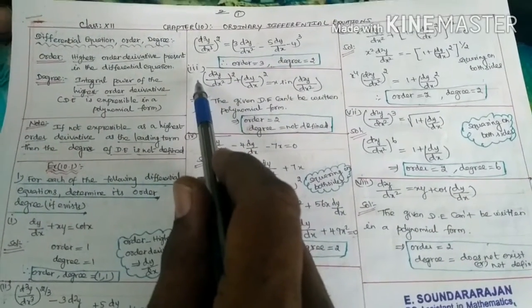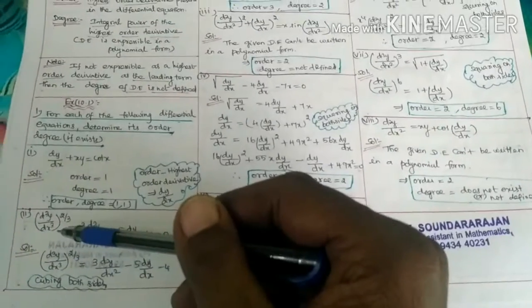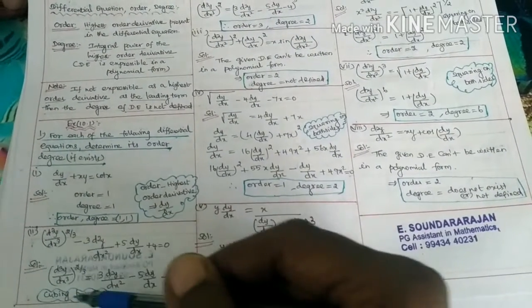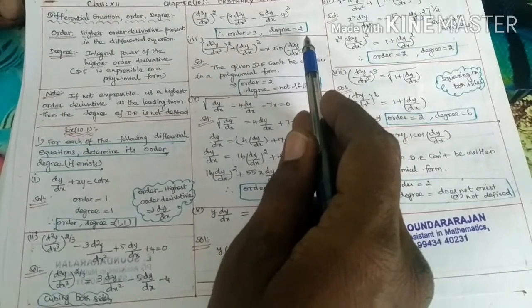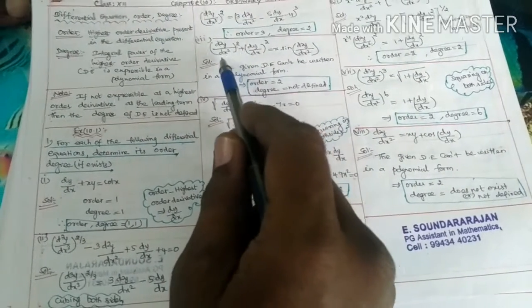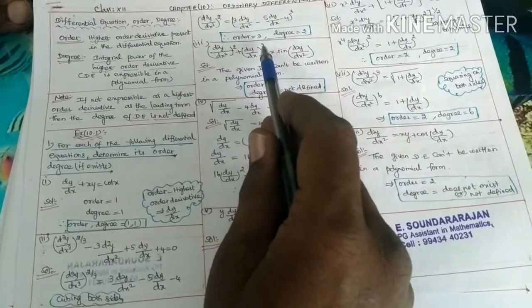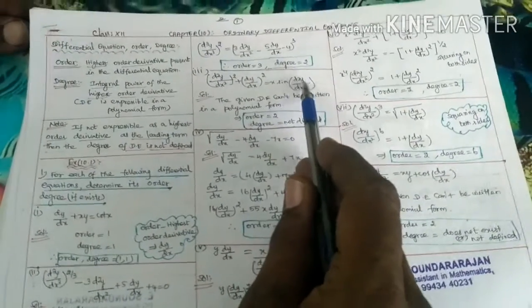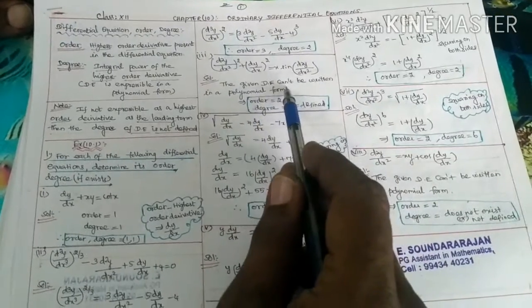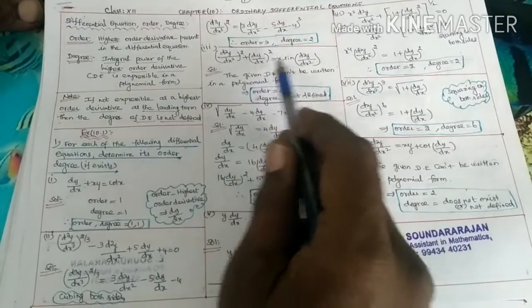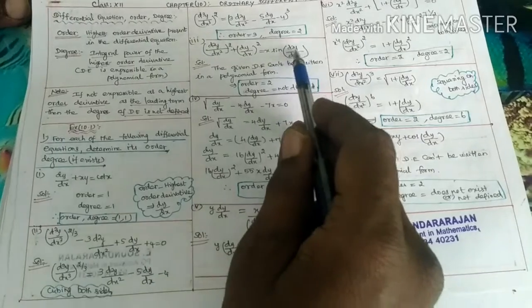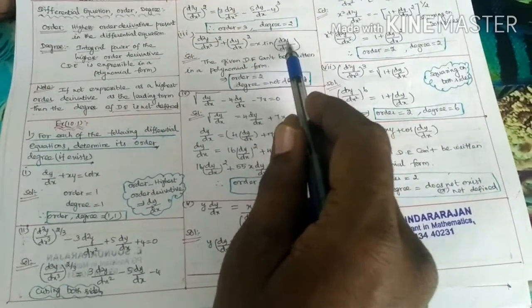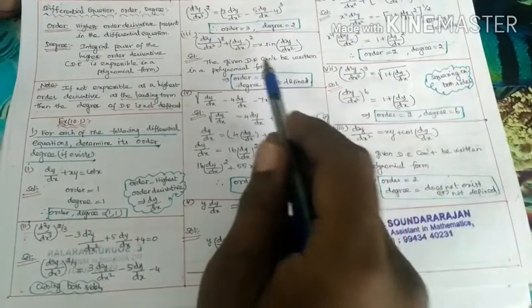Third question (important): (d²y/dx²)² + (dy/dx)² = x·sin(d²y/dx²). The given differential equation cannot be written in polynomial form because the right-hand side contains x·sin(d²y/dx²), which is a transcendental function of the derivative.